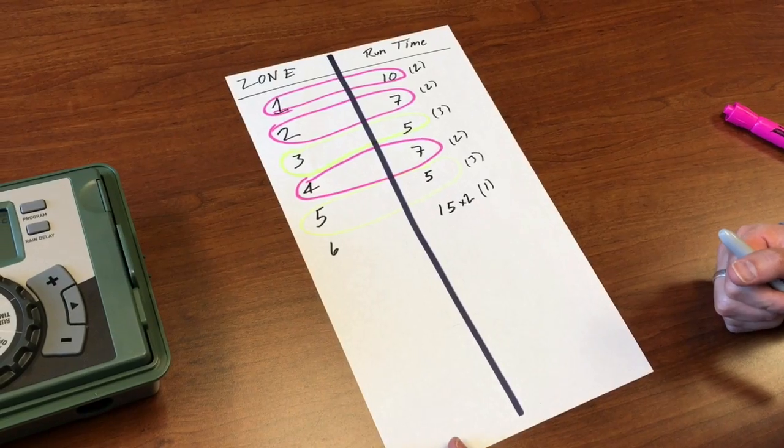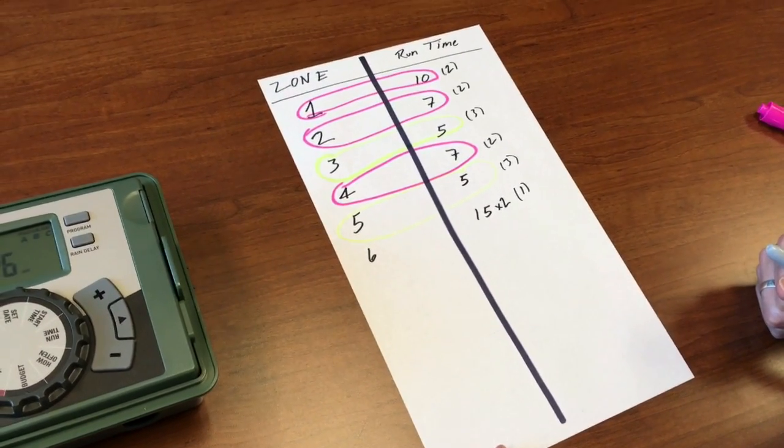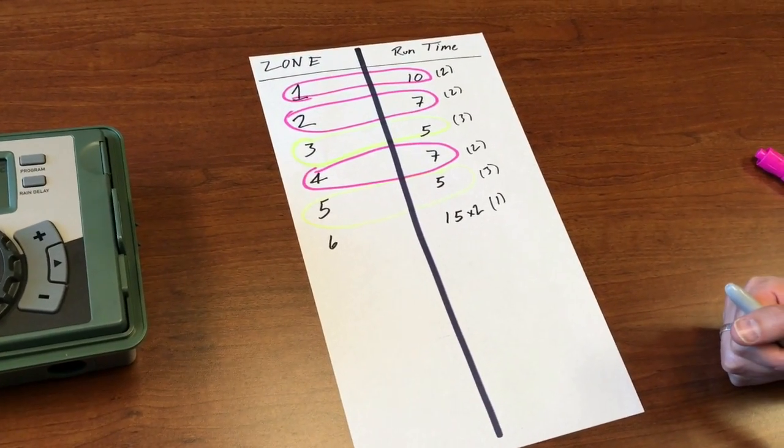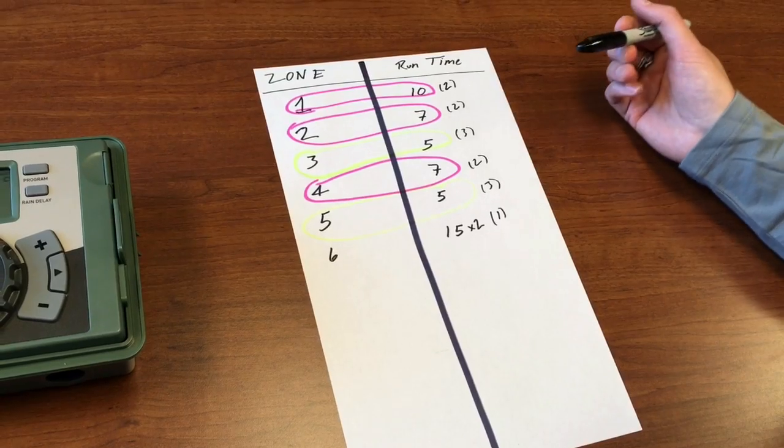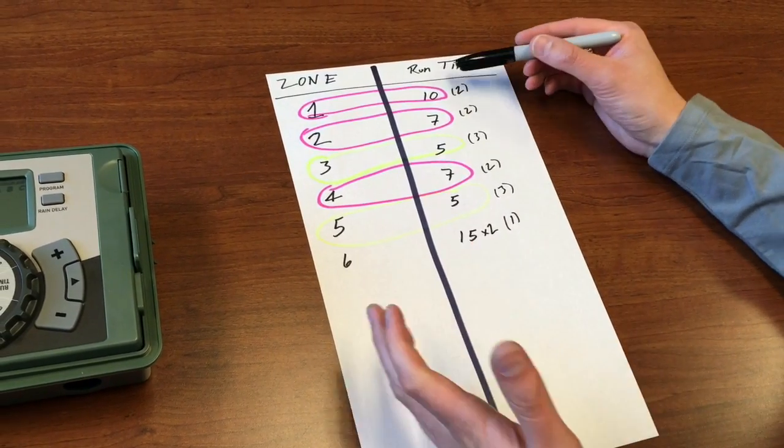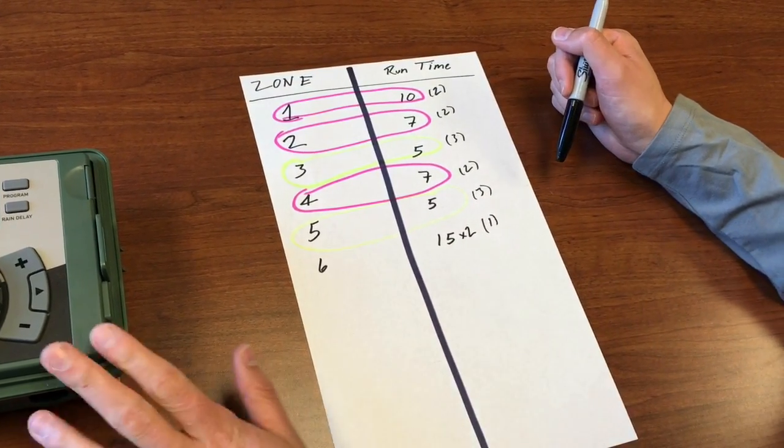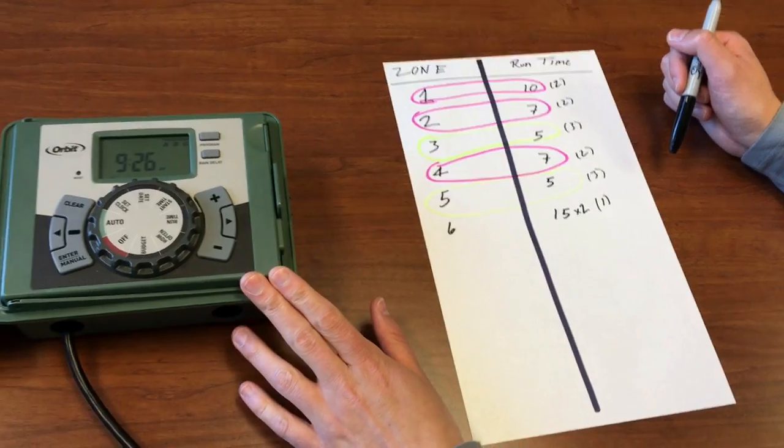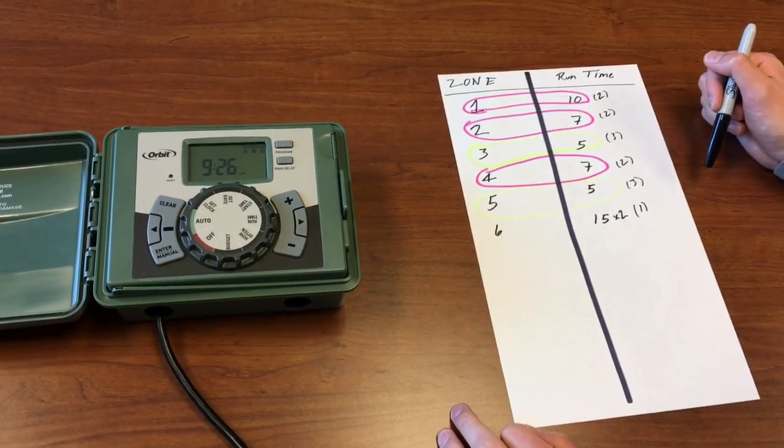Before I begin, let me just emphasize that there's a few steps that you go through. First you need to program which program it will be on. These timers have an A, B, and C program so there's up to three programs.